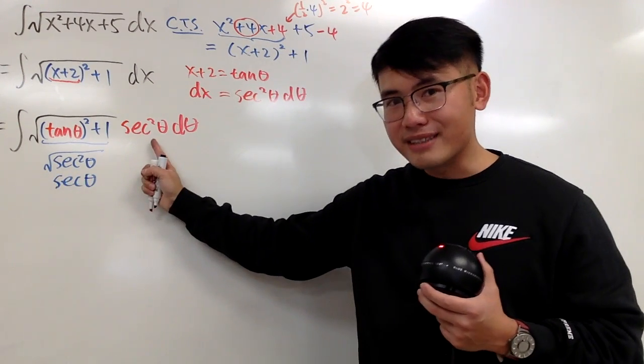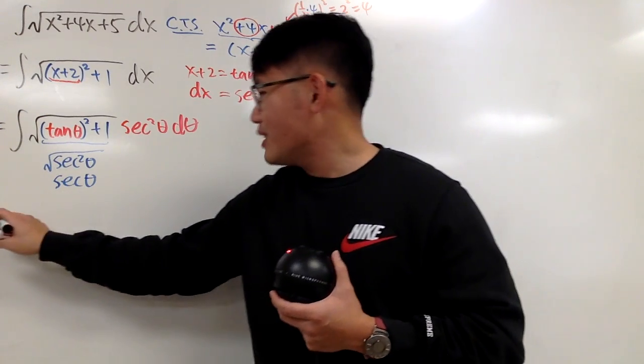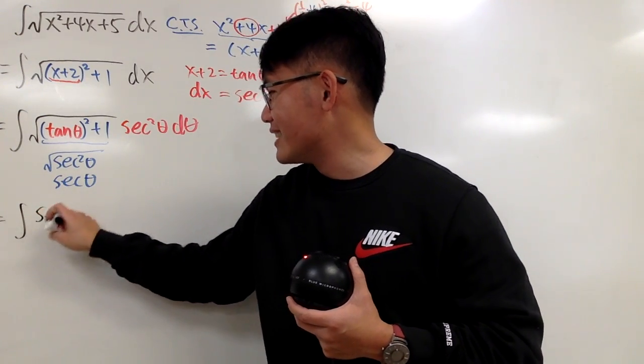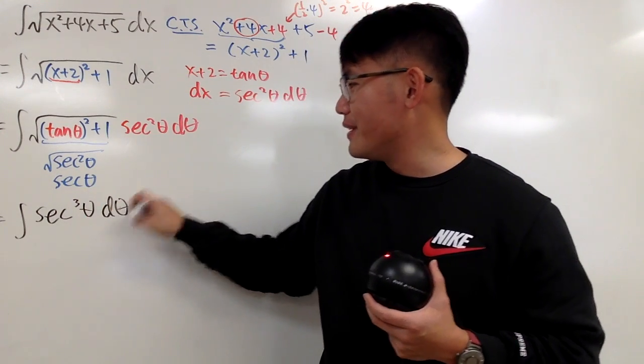And then of course, this times that, you end up with secant to the third power theta. So we get the integral of secant to the third power theta here, d theta.